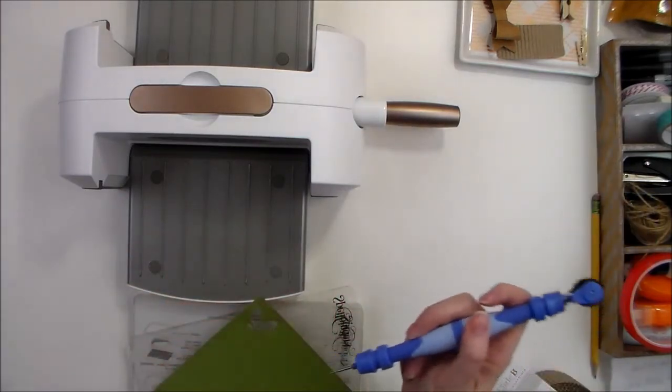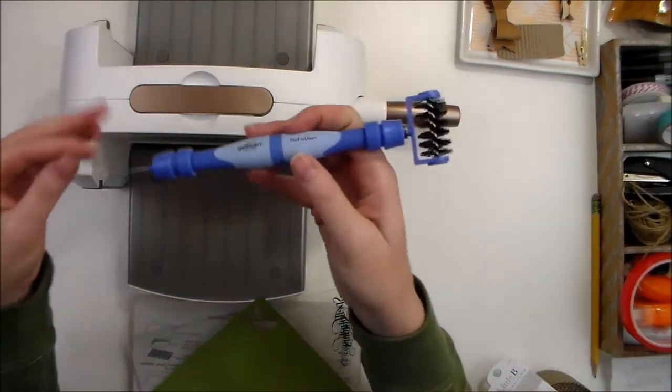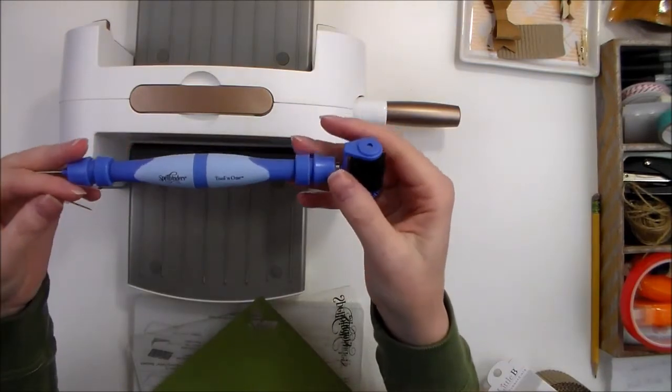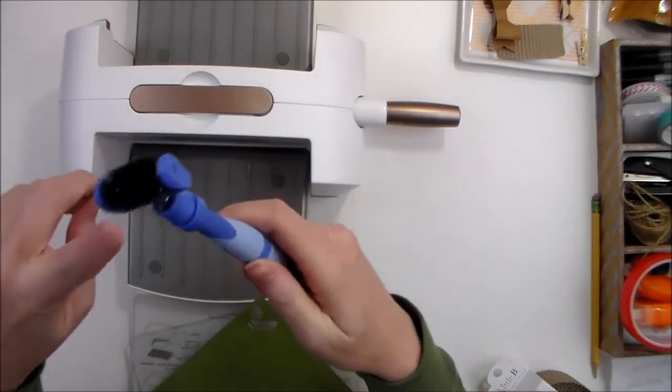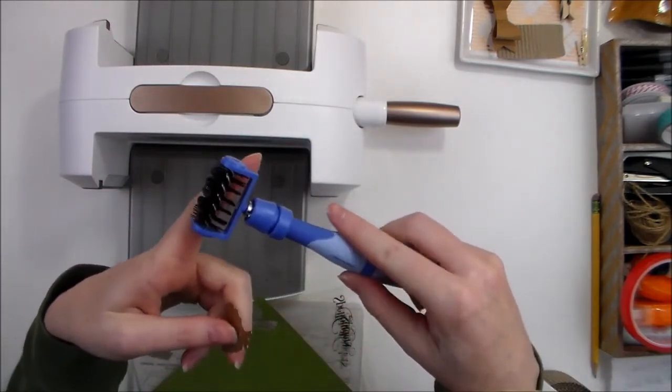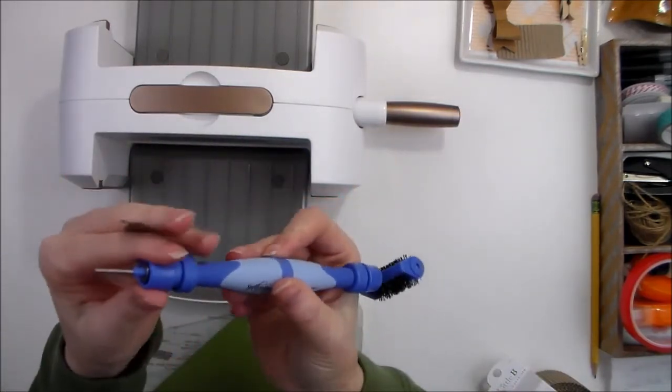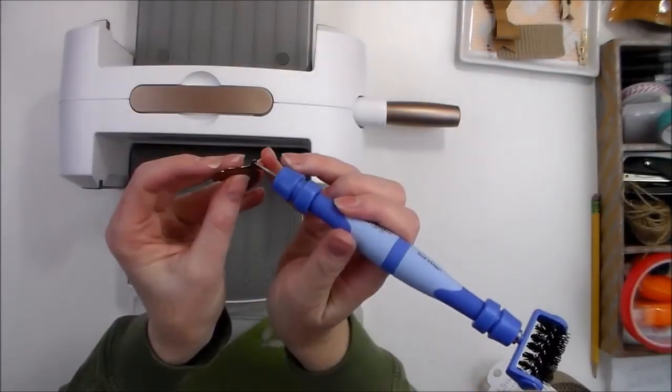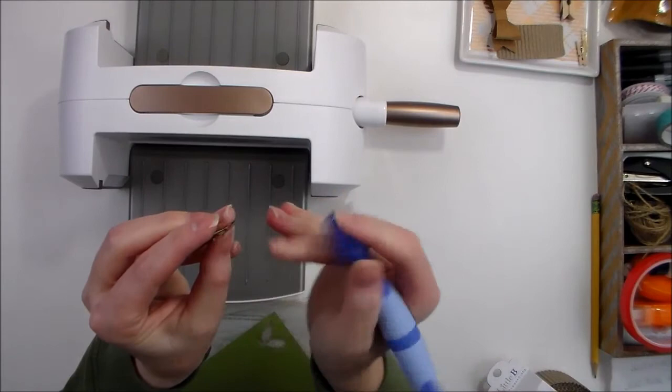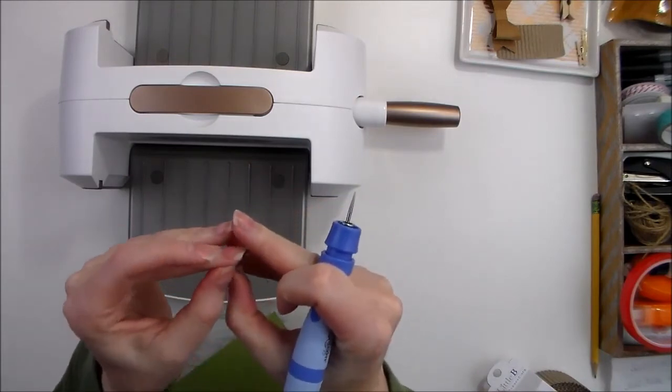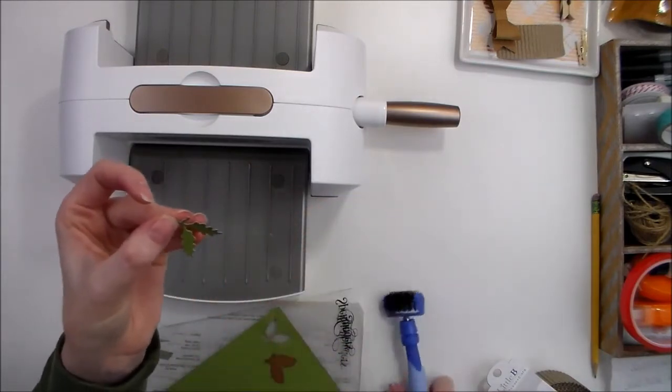And then the other thing that my new favorite tool from Spellbinders is called the Tool-in-1. And as you can see, it's got a brush so you can get out all those little tiny bits. And it's got a paper piercer, so that makes it really easy to just poke right through those little holes to get your die cut out of there.